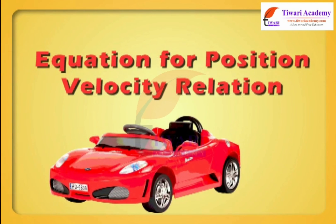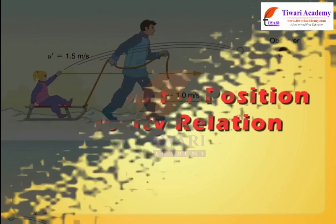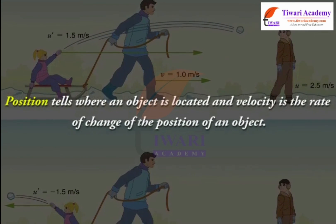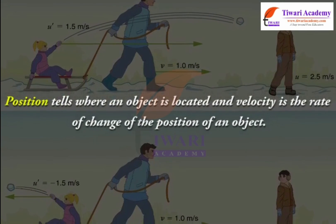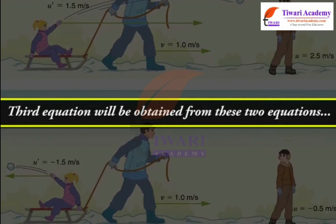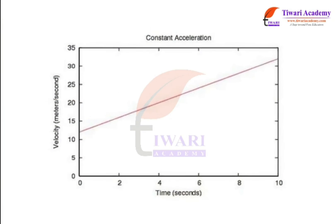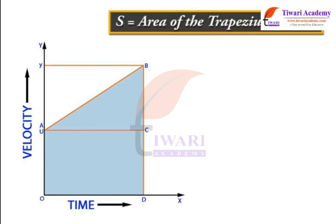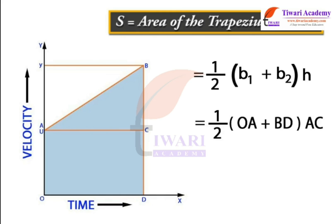Equation for position-velocity relation. Dear students, position tells where an object is located and velocity is the rate of change of the position of an object. The third equation will be obtained from these two equations. From the velocity-time graph, distance traveled S = Area of the trapezium OABD = ½ × (B1 + B2) × H = ½ × (OA + BD) × AC.